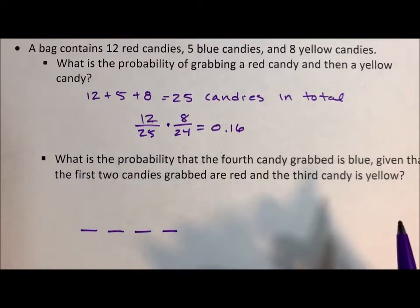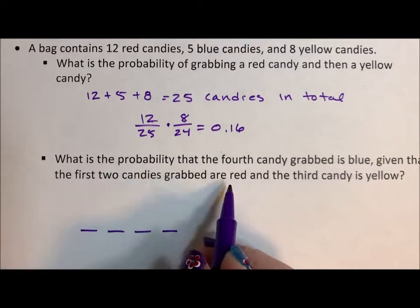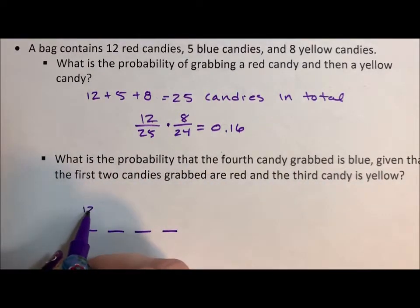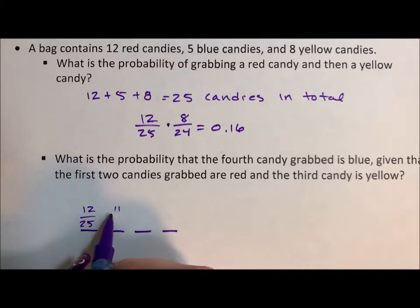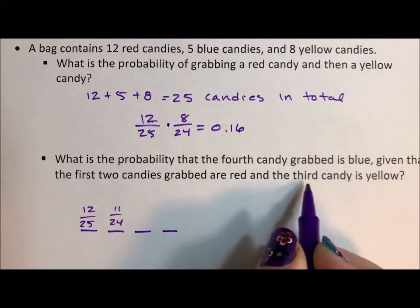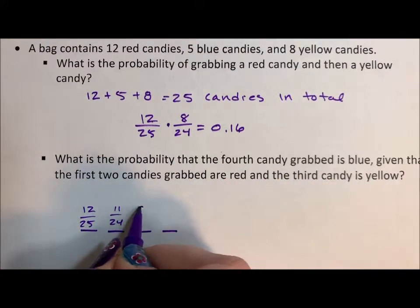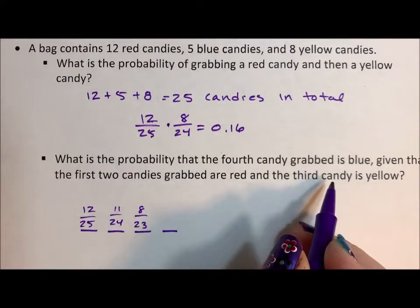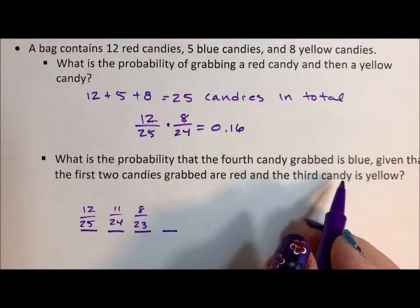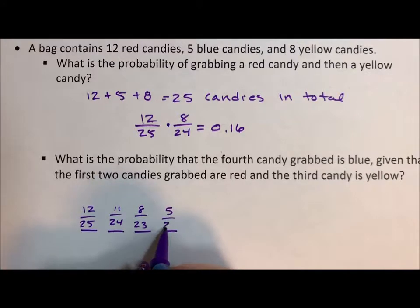So what most students want to do is, oh, the first two are red, so it's 12 out of 25, and then 11 out of 24. And then the third candy is yellow, so it's going to be 8 out of 23. And then the fourth candy is blue, so that's 5 out of 22.